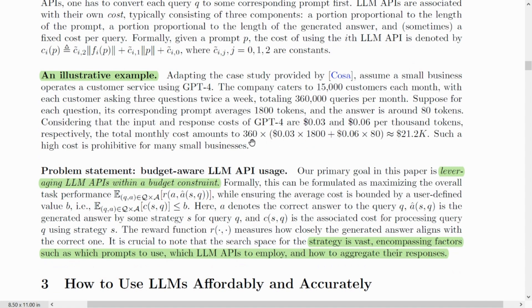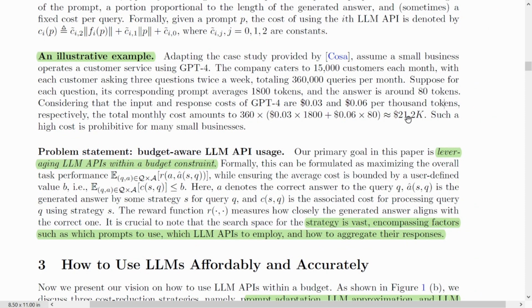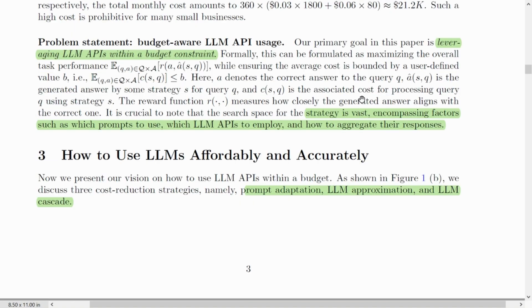An example would be a good way to look into. Suppose a small business operates a customer service using GPT-4. The company caters to 15,000 customers every month, with each customer asking three questions twice a week, totaling 360,000 queries per month. Suppose for each question, its corresponding prompt averages 1,800 tokens, and the answer is around 80 tokens. The cost for GPT-4 would be $0.03 per thousand tokens and $0.06 per thousand tokens for the inputs and outputs respectively. And the total cost would be about $21,000. Such a cost is very high for a small business. If you want to run a small business, how to minimize the cost? We have a solution here.